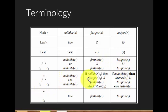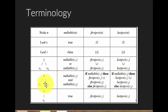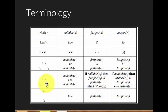For a cat node: if C1 is nullable, firstpos is the union of C1 and C2's firstpos; if C1 is not nullable, firstpos is just C1's firstpos. For lastpos: if C2 is nullable, lastpos is the union of C1 and C2's lastpos; if C2 is not nullable, lastpos is just C2's lastpos — because for lastpos we always look at the last node, C2.